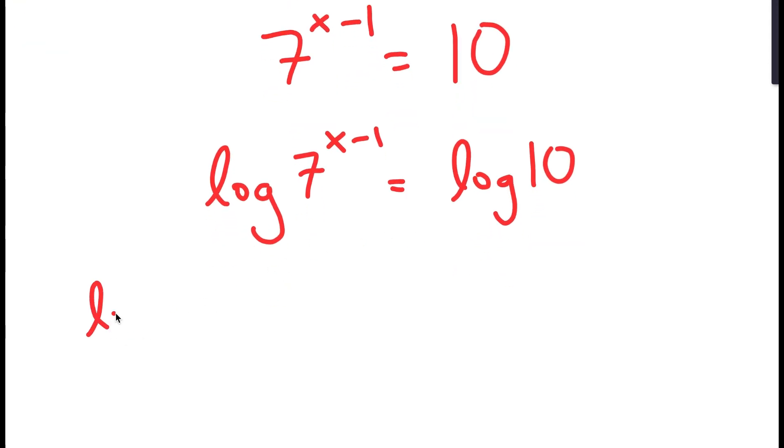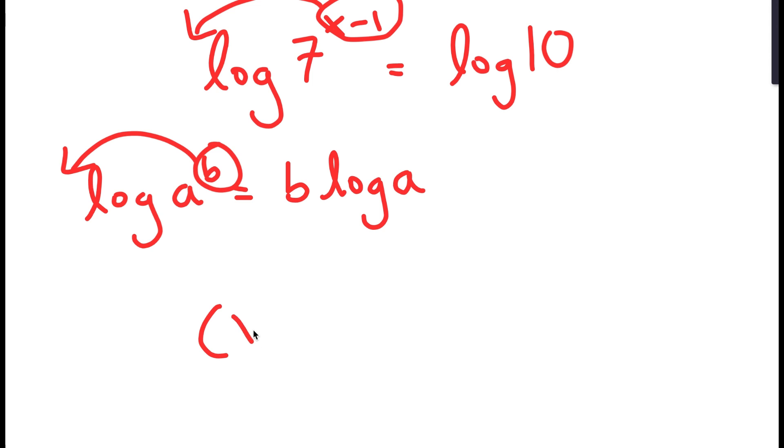If I have something in the form log a to the power of b, I can move this exponent b to the front, so it's equal to b times log a. x minus 1 is b in this case, so I can move it to the front. So I get x minus 1 times log 7 is equal to log 10.